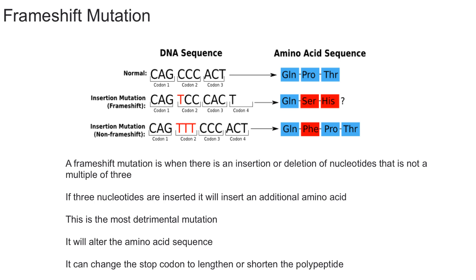In this video I'm going to explain what a frameshift mutation is. As a brief summary, remember that your DNA is eventually used to create proteins. Your DNA is transcribed into mRNA, and then the mRNA is translated into proteins. As you can see, it goes from DNA sequence to amino acid sequence — amino acids are not made directly from DNA.